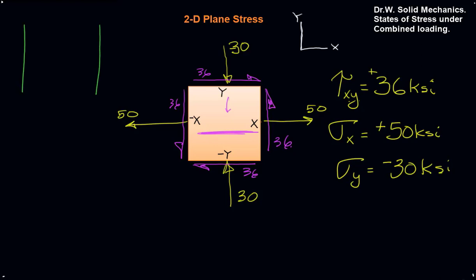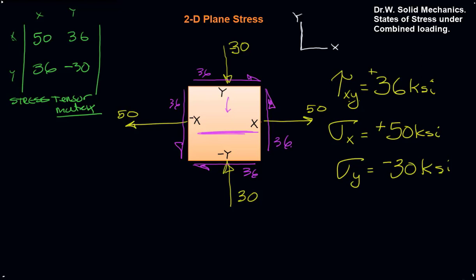This state of stress can be written out as a matrix where x and y label rows and columns. On the x-face we have 50 — positive. The tau x-y value is 36. On the y-y face that would be negative 30. By the complementary property of shear, all off-main-diagonal entries will be the same, so this will be 36 as well. Given this stress tensor or matrix, we immediately know sigma x, sigma y, and tau x-y, and from there we can draw the element.